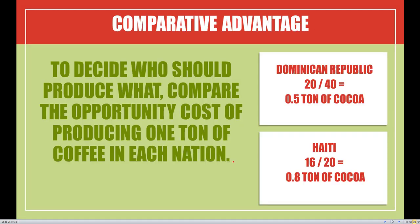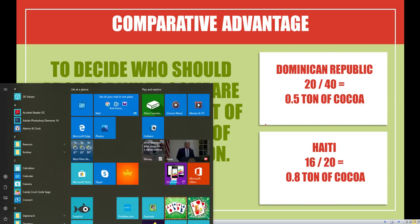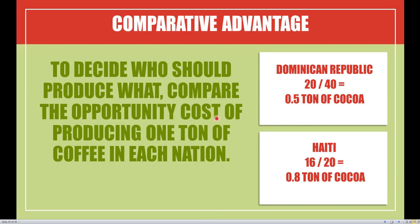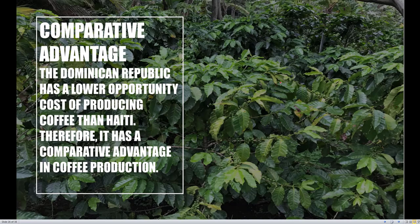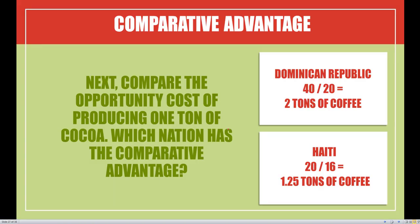To confirm: the Dominican Republic has an opportunity cost of 0.5 tons of cocoa to produce one ton of coffee, compared to Haiti's 0.8, so the Dominican Republic has the comparative advantage in coffee. For cocoa, the Dominican Republic's opportunity cost is 2 tons of coffee while Haiti's is 1.25, so Haiti has the comparative advantage in cocoa and should specialize there. Opportunity costs are always expressed in terms of the other good, and we choose the country with the lower number.